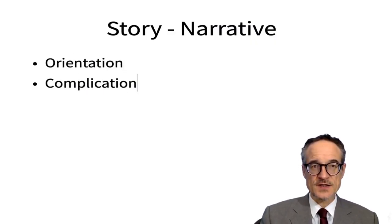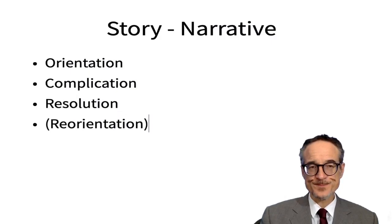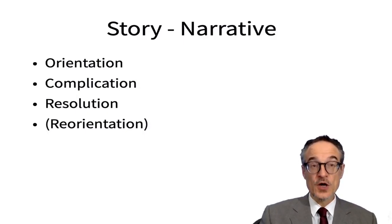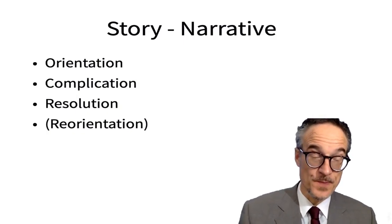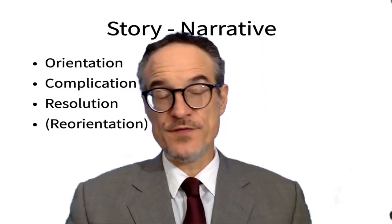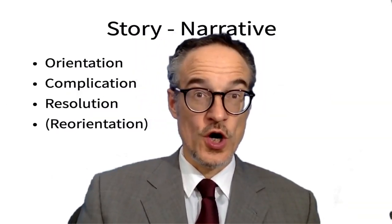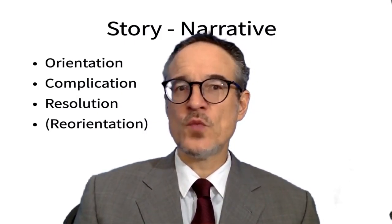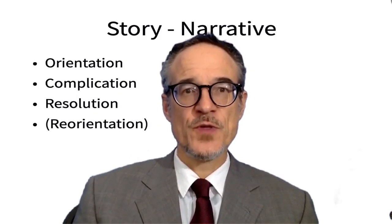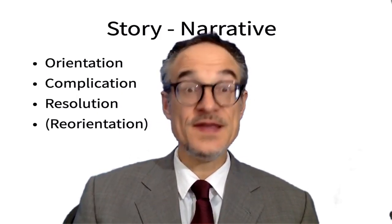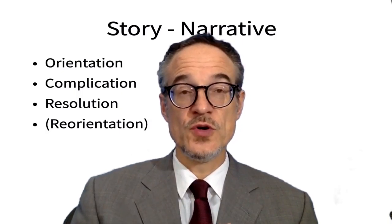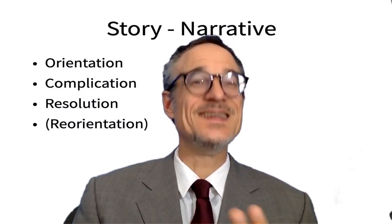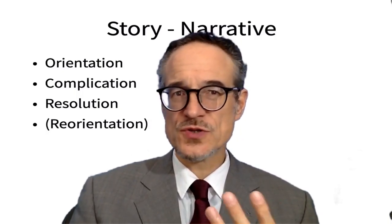A story basically has four parts — sometimes only three parts: orientation, complication, resolution, and reorientation. In the orientation, we find out where we are and who the main character is. Often we also get an idea of what kind of story it is and what the themes are. So it tells us who is the main character, where it is, when it is, and what it's about.